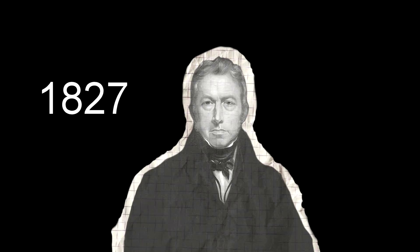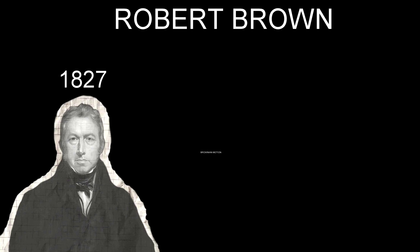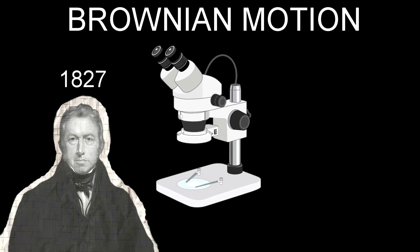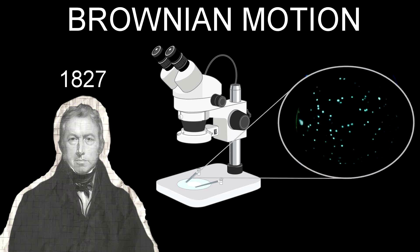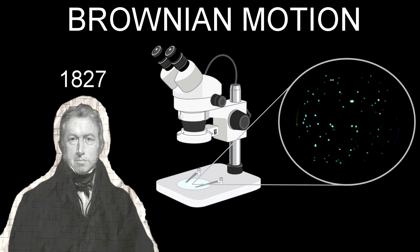In 1827, Scottish botanist Robert Brown discovered what later came to be known as Brownian motion. Looking through a microscope, he noticed a tiny pollen grain suspended in water moved in an erratic, jittery way.